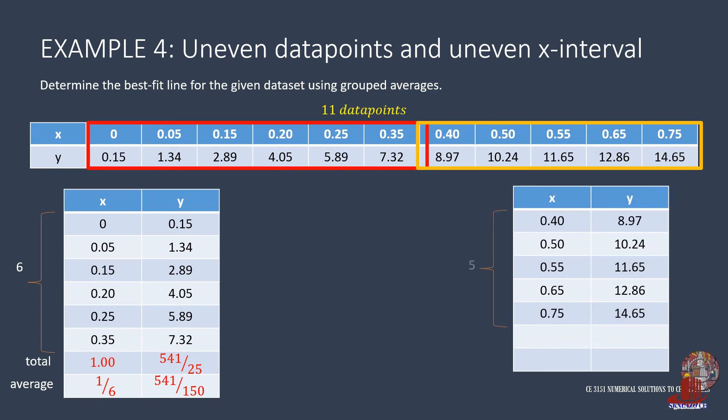The second group has 5 data points, from X of 0.4, 0.5, 0.55, 0.65, and 0.75, which total to 2.85. The average X is then 2.85 divided by 5 to get 0.57.